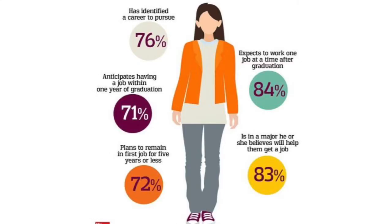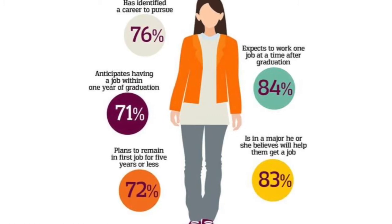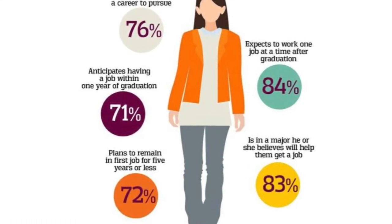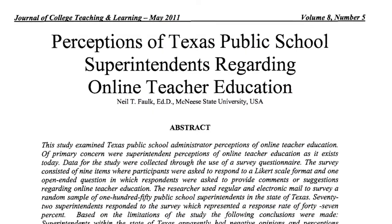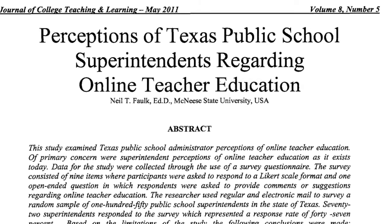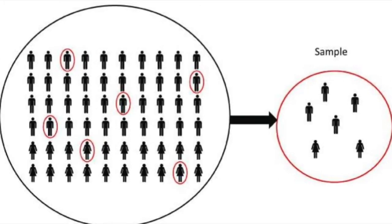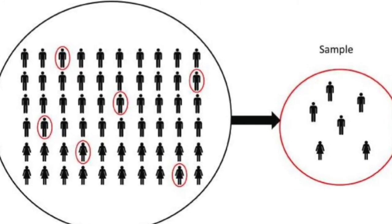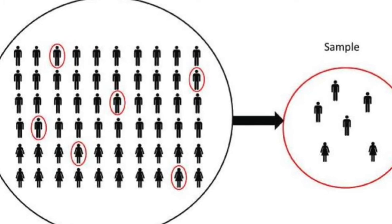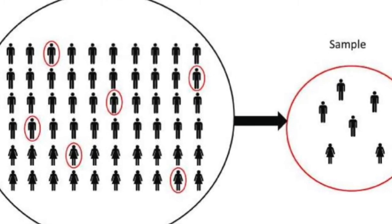There are two main types of surveys: the cross-sectional and the longitudinal. A cross-sectional survey collects data at one point in time, while a longitudinal survey studies changes over a period of time. A cross-sectional survey is beneficial for studying current attitudes, beliefs, opinions, and practices — much like the Falk study that measured the perceptions of Texan school superintendents regarding online teacher education. Longitudinal studies are good for collecting information regarding trends of the same population, cohort or sub-population changes, or changes experienced by a panel of the same people.